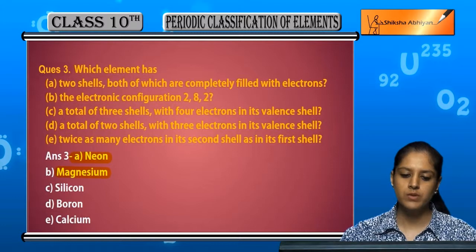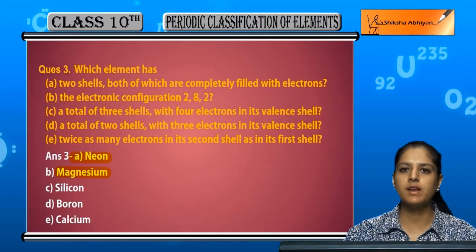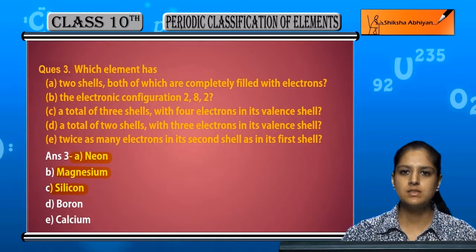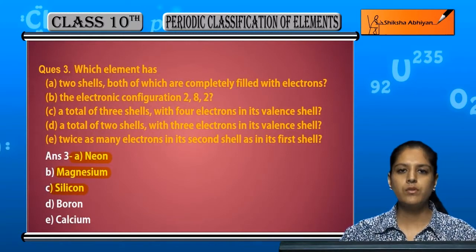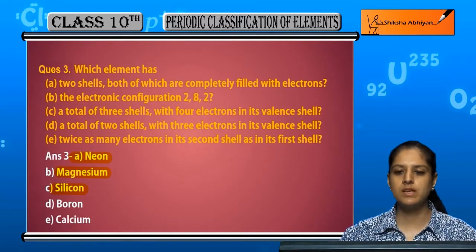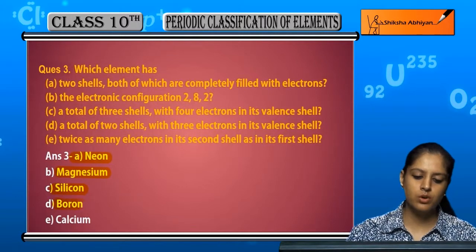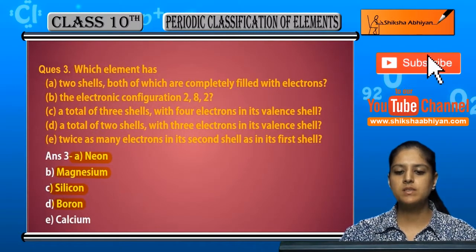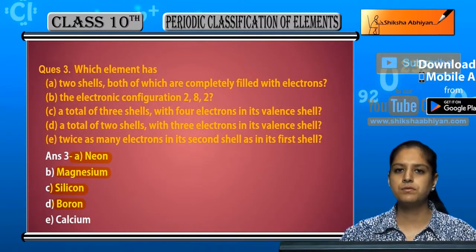Three shells with four valence electrons — that element is Silicon. Next: an element with a total of two shells and three electrons in its valence shell — that is Boron.